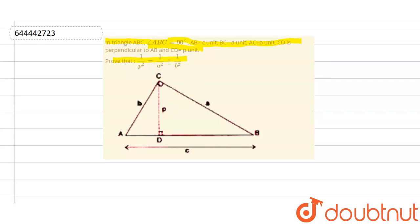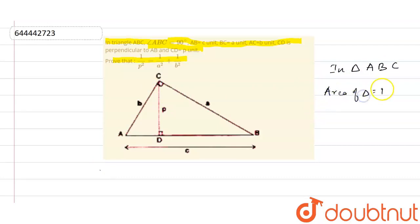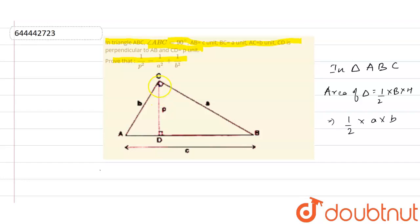First of all, in triangle ABC, this angle is 90 degrees. So the area of the triangle is equal to half multiplied by base multiplied by height. This will be the base, that is a, this will be the height, that is b, and this will be the hypotenuse. So area equals half multiplied by a multiplied by b.